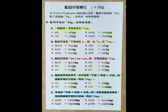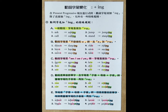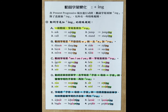B: If the end of the verb is a silent E, we need to drop the E and add I-N-G. 1. Dance — dancing. 2. Have — having.